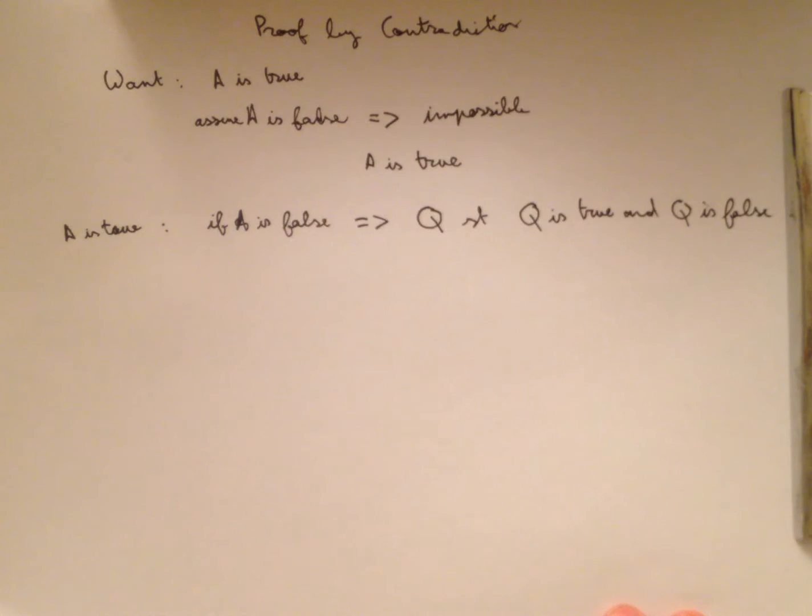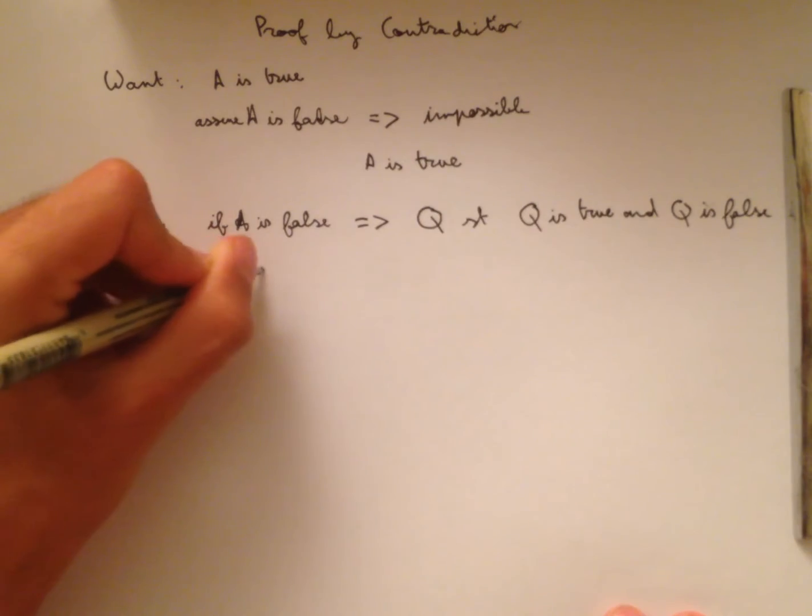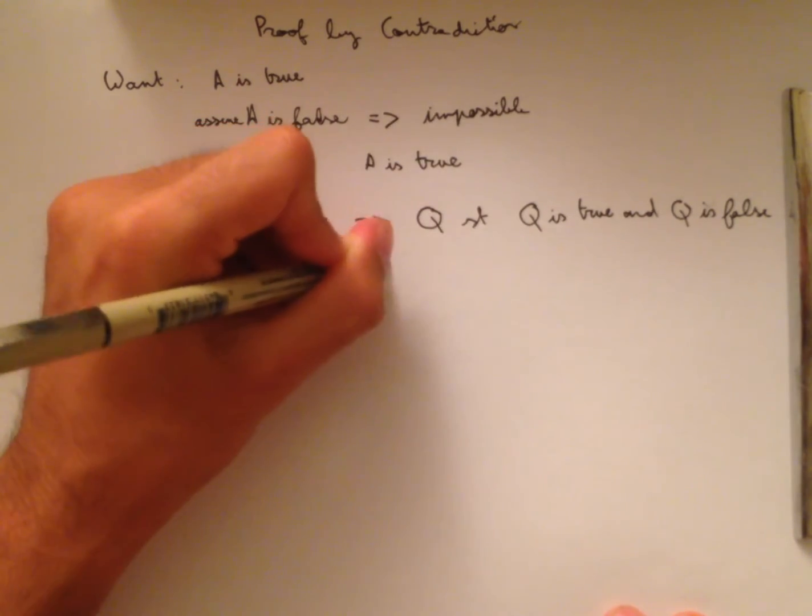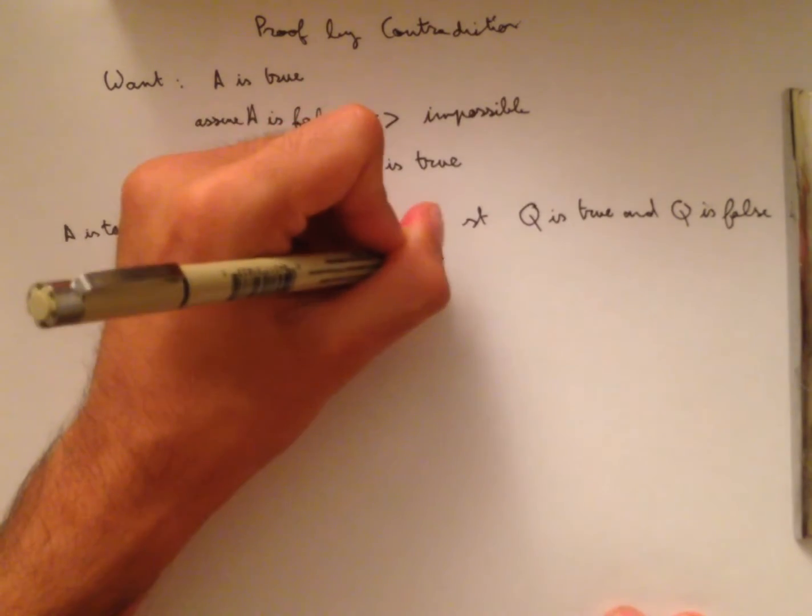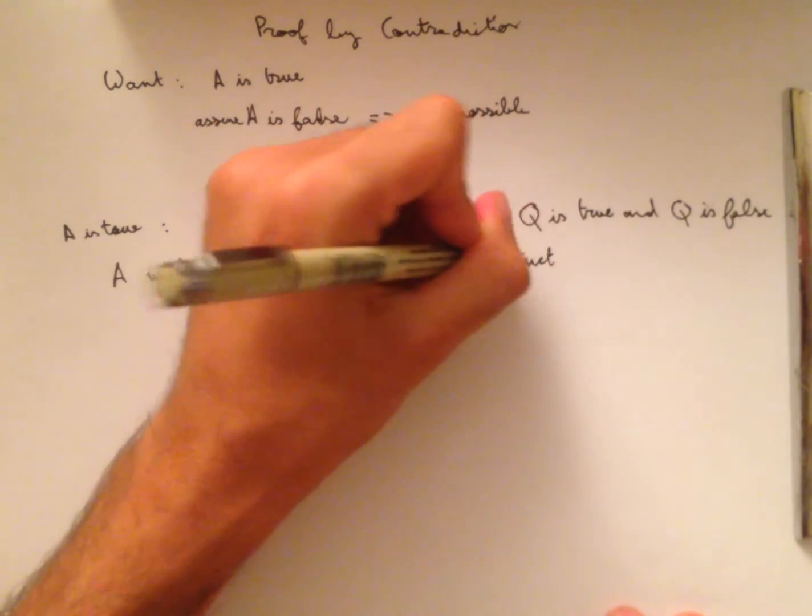So now let's apply this to our definition of a set from earlier. Let's recall that a set is a well-defined collection of distinct objects.